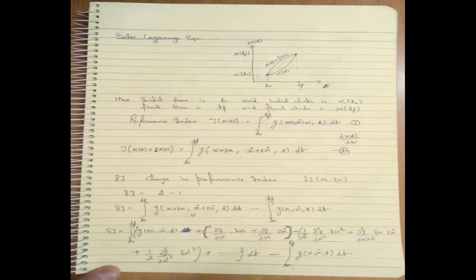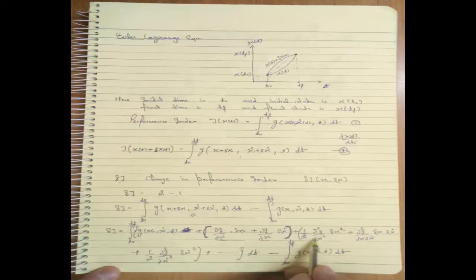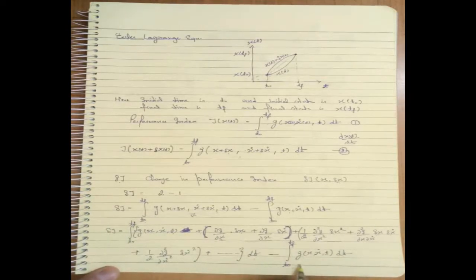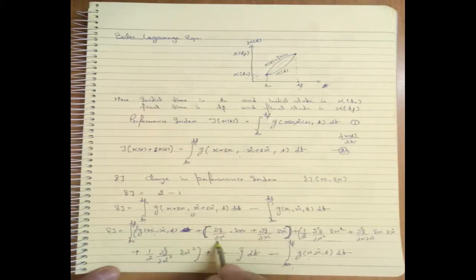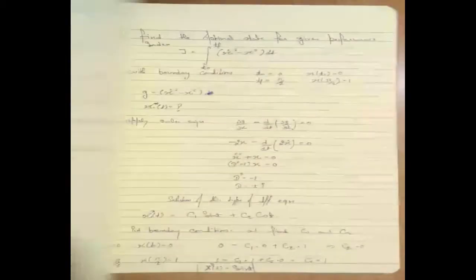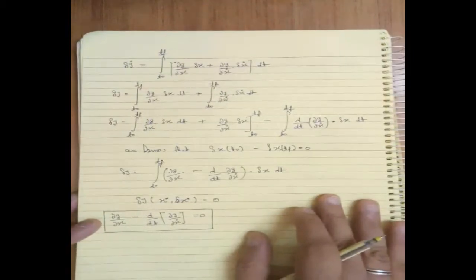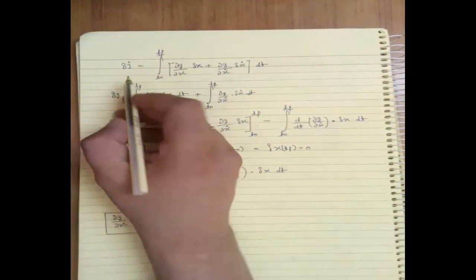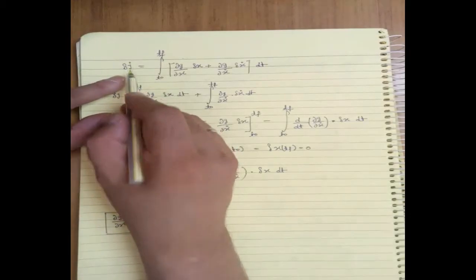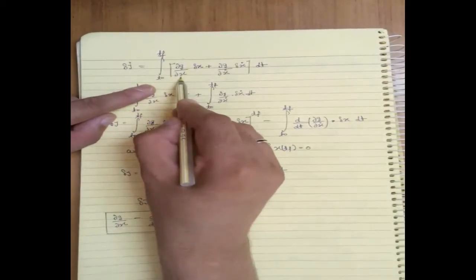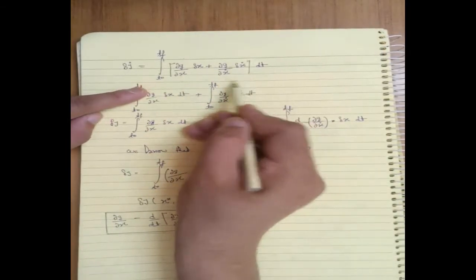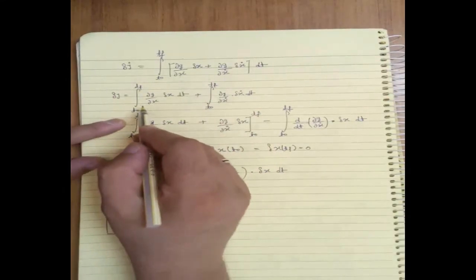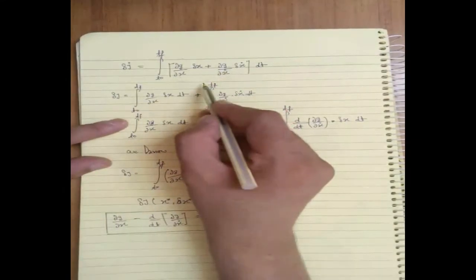The second-order terms and higher-order terms have very small values and are neglected. The G(X, X-dot, T) terms cancel out. We are left with: δJ = integral from T0 to Tf of [(∂G/∂X)δX + (∂G/∂X-dot)δX-dot] dT.